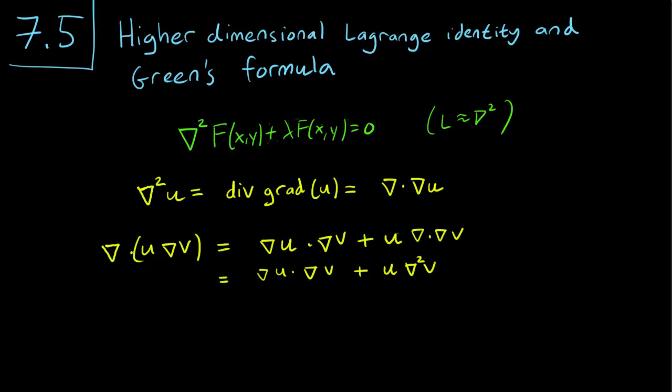And we can come up with something similar if we switch v and u. So divergence of v gradient u is going to be equal to the gradient of v dot the gradient of u plus v times Laplacian of u. Let's call the first equation 1 and the second equation 2.